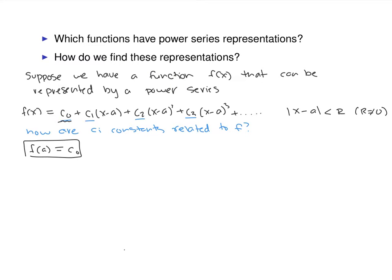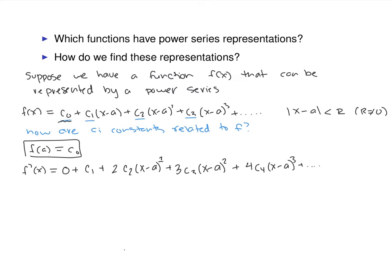So this first constant is f of a. Then we take the derivative of this expression — we know we can differentiate power series and the radius of convergence remains unchanged. The derivative of c0 is 0, the derivative of c1 times x minus a is just c1, plus 2c2 times x minus a, plus 3c3 times x minus a squared, plus 4c4 times x minus a cubed, and so on. If we plug in a, all those terms zero out, and f prime of a equals c-sub-1. So c0 is f of a, and c1 is f prime of a.